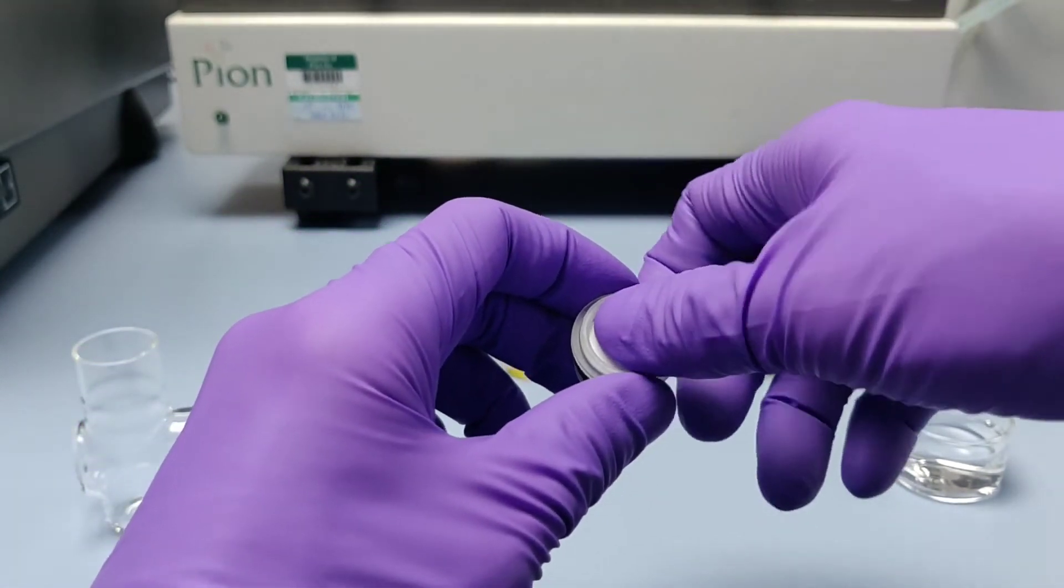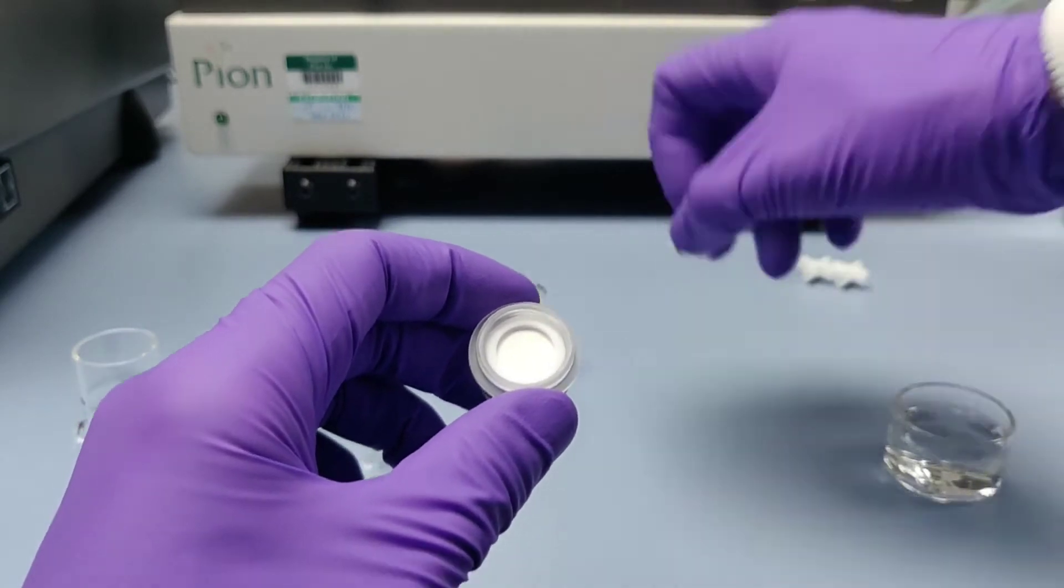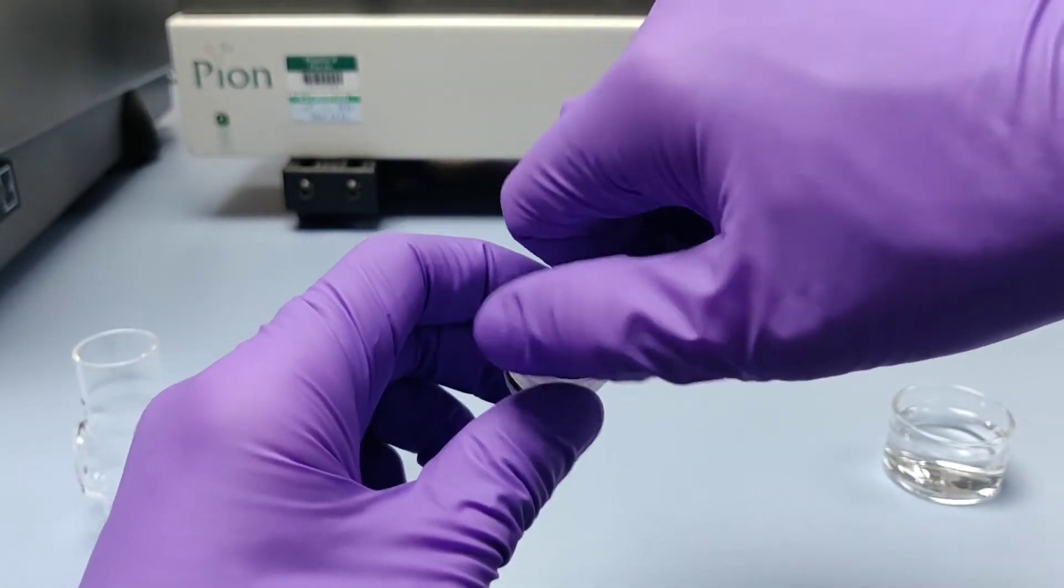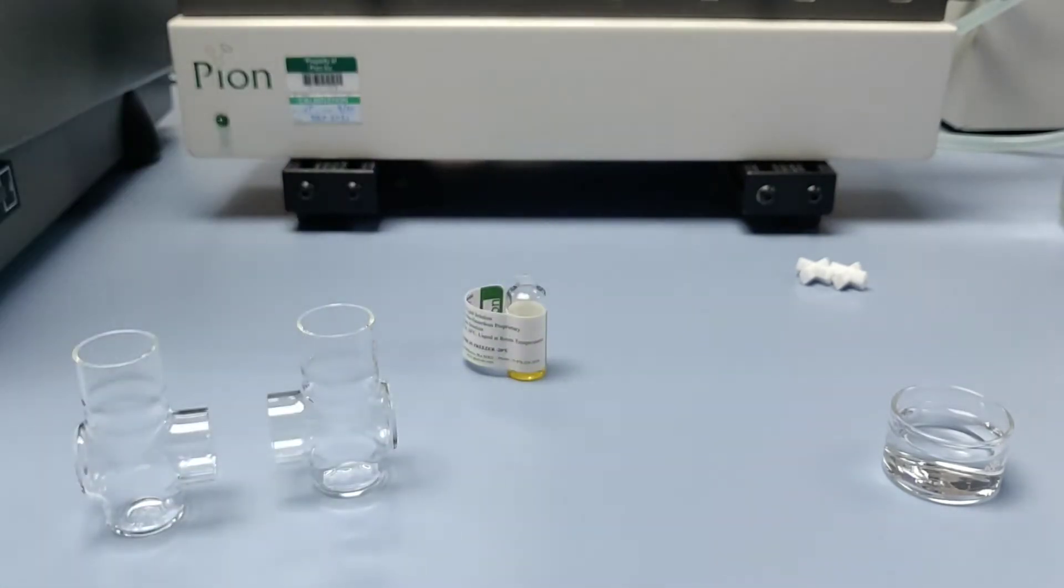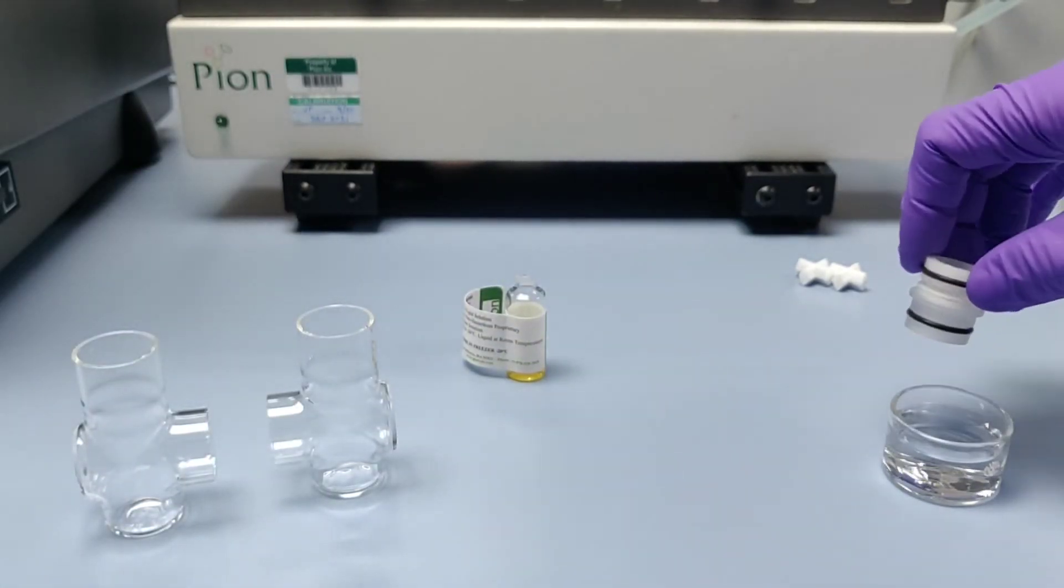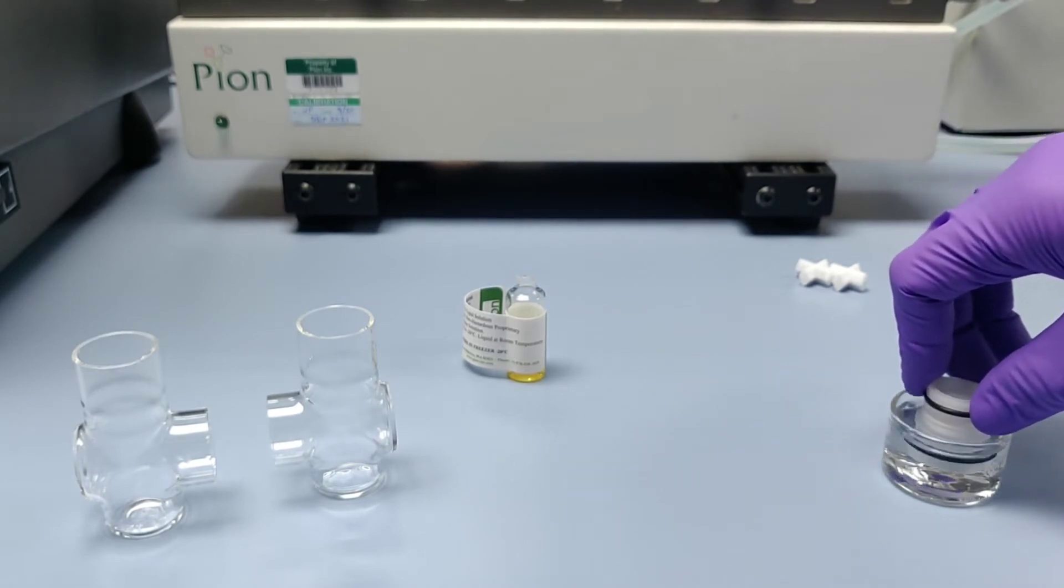On top of the membrane, the Teflon washer is placed, and the male half of the membrane holder is screwed into place. The membrane and holder are bi-directional and can be assembled into the glass pair in either orientation.